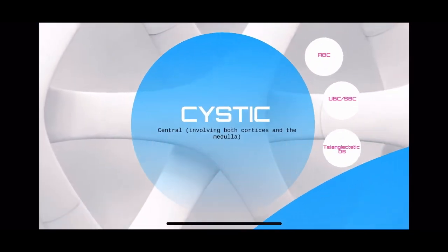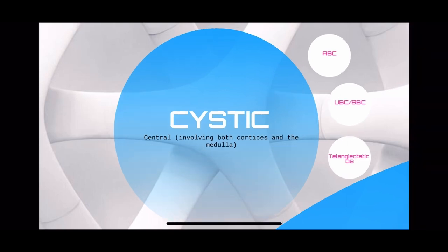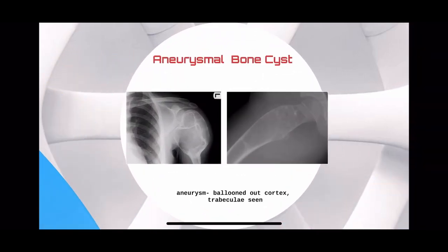Cystic lesions are central lesions in the long bone that occupy the medullary cavity as well as both cortices — mark my words, both cortices. Such cystic lesions can be aneurysmal bone cysts, in which there is ballooning of the cortex. Ballooning means the horizontal diameter of the cyst will be more than the diameter of the original native bone.